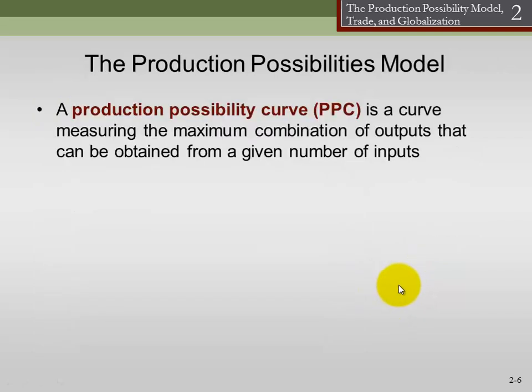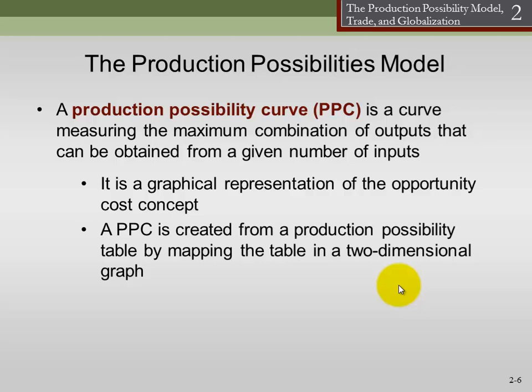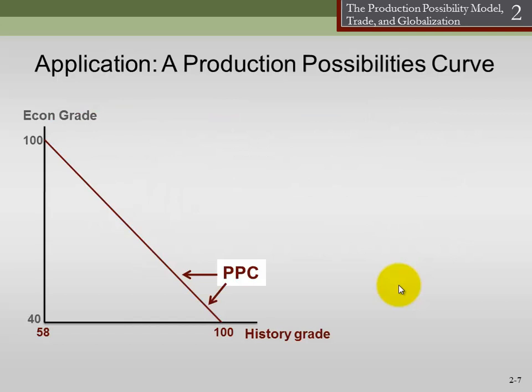The production possibilities curve is just like the table, only in graphical form — a graphical representation of the opportunity cost concept. A production possibilities curve is created simply by plotting the points from the production possibilities table. This is a somewhat unusual production possibilities curve — it won't usually look like this. They won't usually be a straight line, but in this case, it is a straight line.